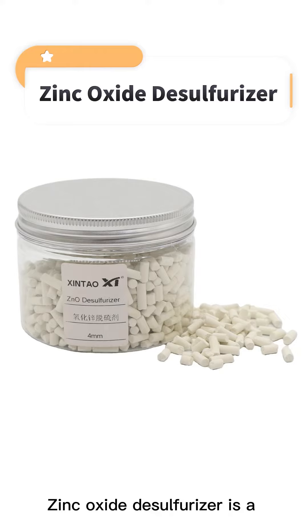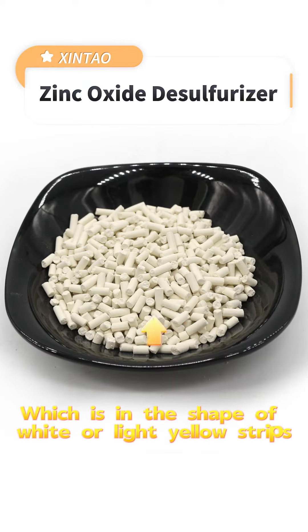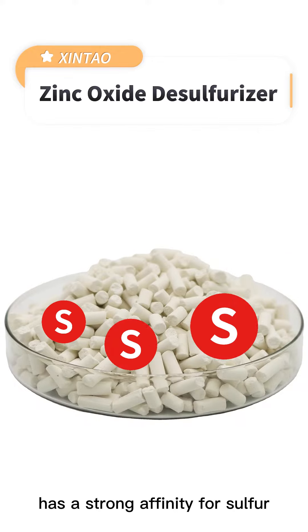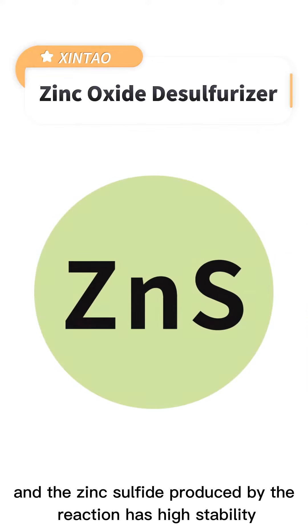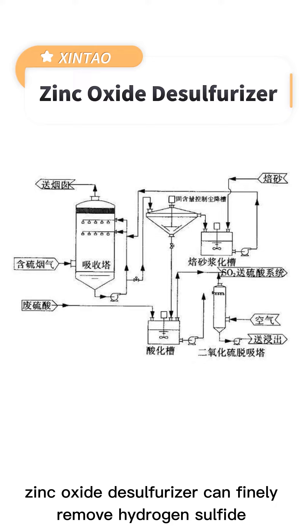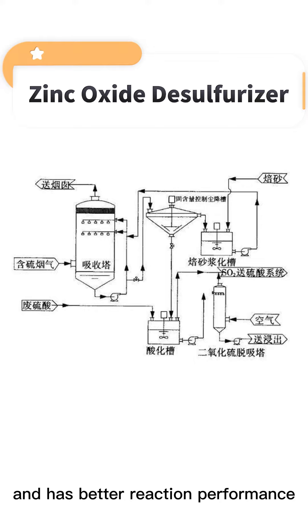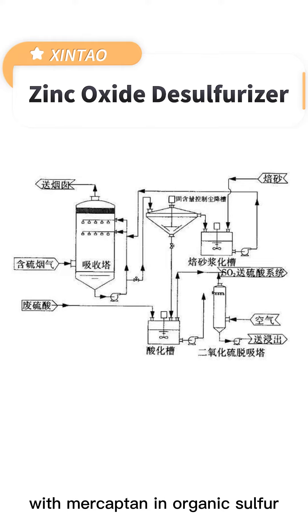Zinc oxide desulfurizer is a catalytic conversion absorption solid desulfurizer, which is in the shape of white or light yellow strips, has a strong affinity for sulfur, and the zinc sulfide produced by the reaction has high stability. Therefore, zinc oxide desulfurizer can finely remove hydrogen sulfide and part of organic sulfur in raw materials, and has better reaction performance with mercaptan in organic sulfur.